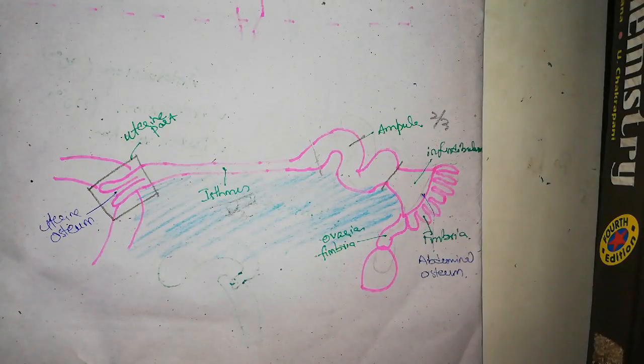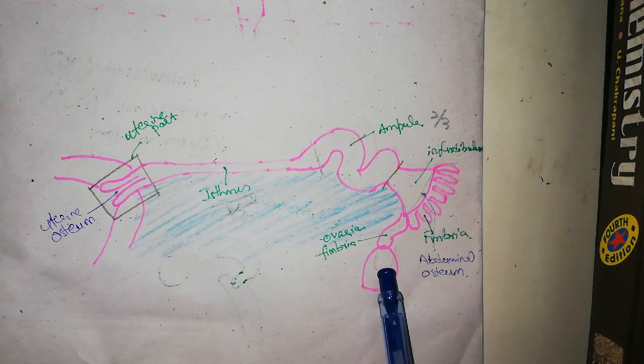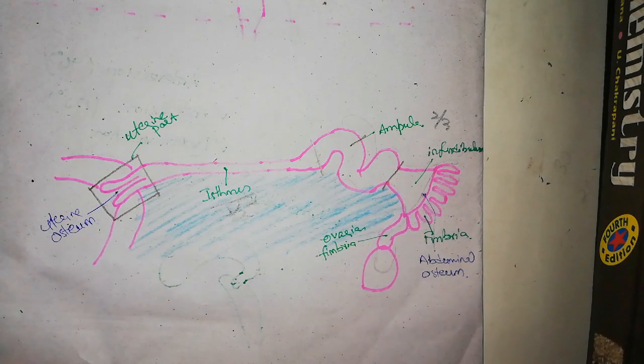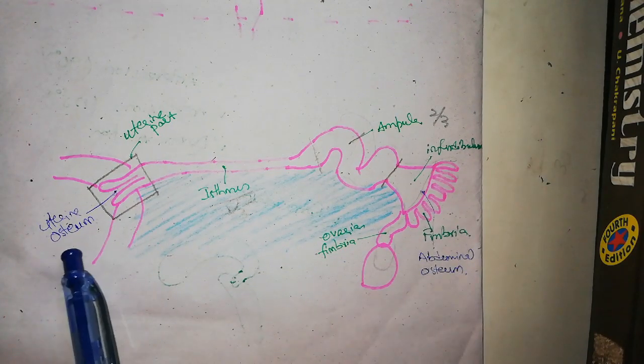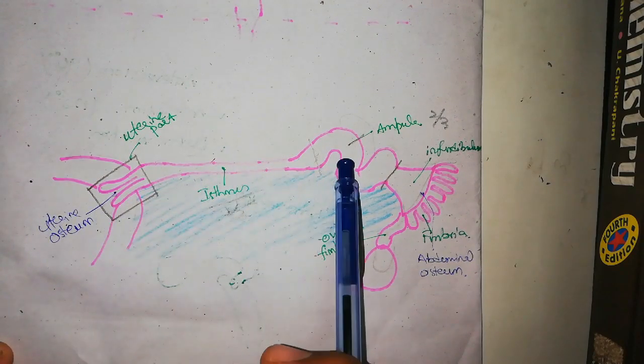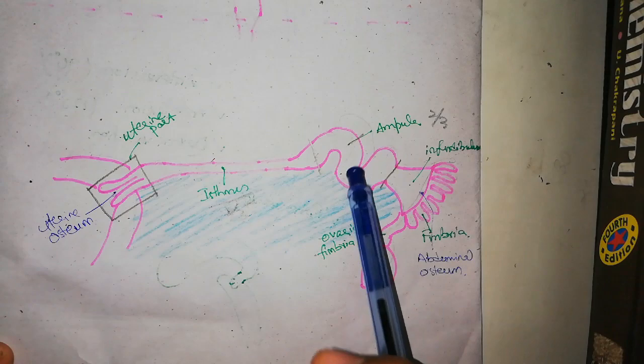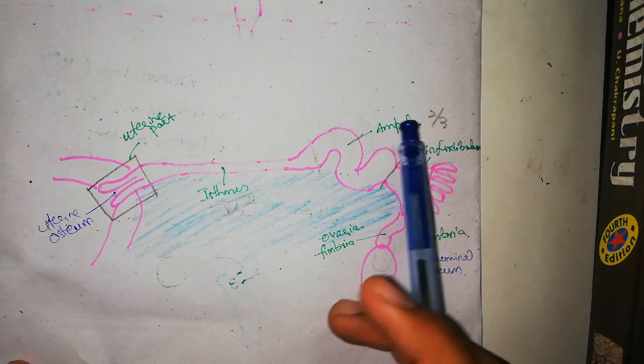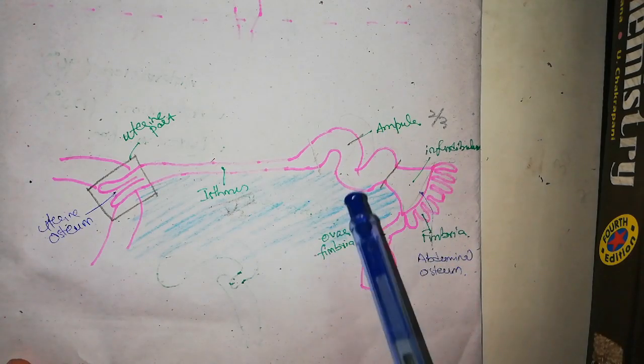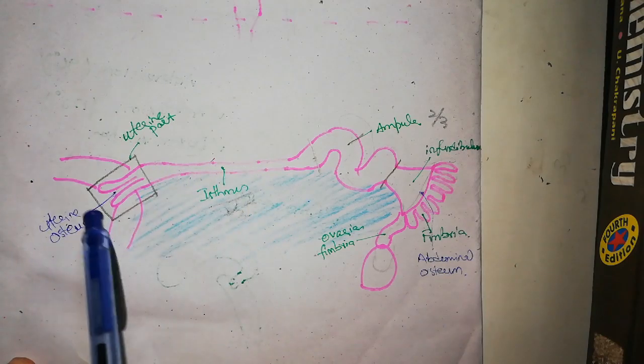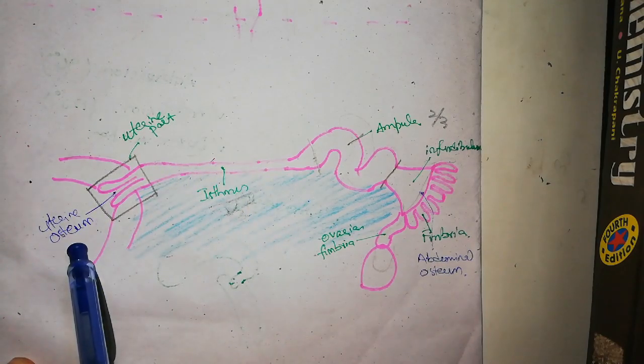The importance of this fallopian tube is actually to move the oocyte from the ovary into the ampulla through the abdominal osteum. At the same time, moving sperm from the uterine osteum to the ampulla. The oocyte and sperm fuse there, that is, fertilization occurs in the ampulla. So ampulla is the site of fertilization. The resulting zygote moves through the fallopian tube and gets implanted in the uterus.